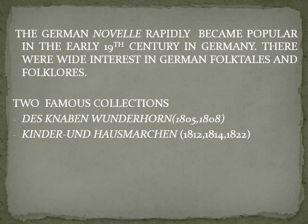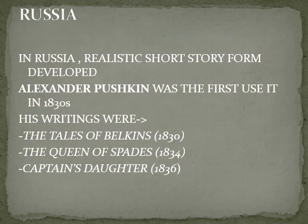The German Novelle rapidly became popular in the early 19th century in Germany, with wide interest in German folklore and folk tales found in journals. The most famous collections are Des Knaben Wunderhorn, 1805 and 1808, and Kinder- und Hausmärchen, 1812, 1814, and 1822. These are the famous short story collections from Germany.